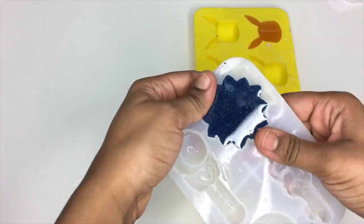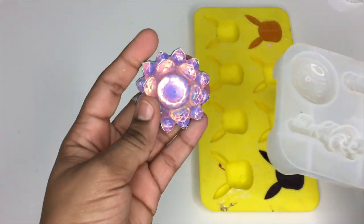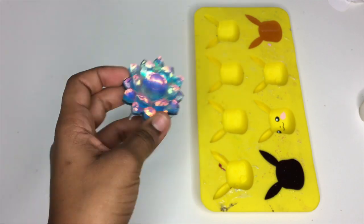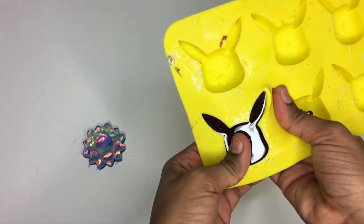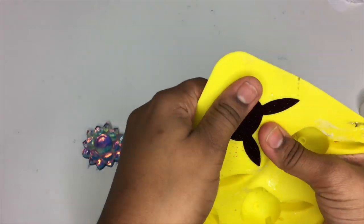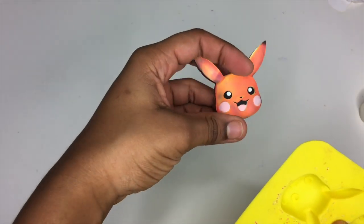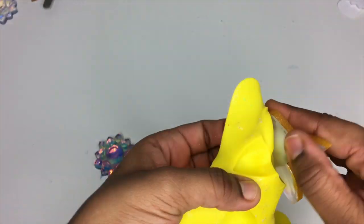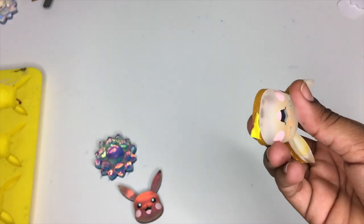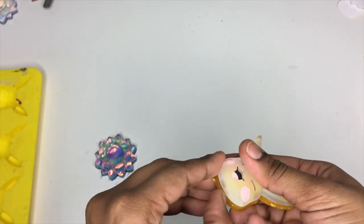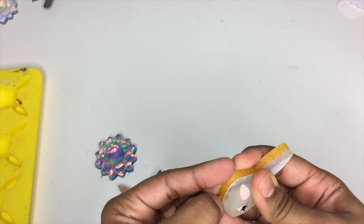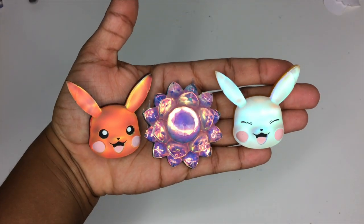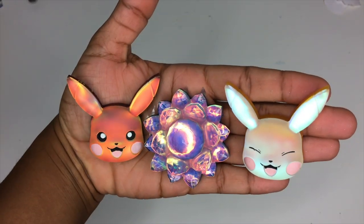So I waited about 24 hours before I decided to demold the charms and this is how they looked after demolding them. And for the Pikachu ones, if you want that glossy effect that you see in the beginning of my video, you're going to want to dome them with resin which if you guys want, I can do a video showing you how I dome my pieces, so just leave a comment down below if you guys want me to and yeah.